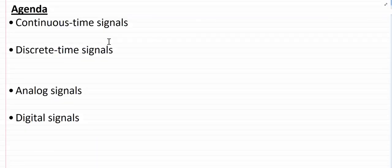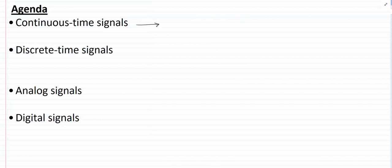Hello everyone, this is Saramal and in this video I am going to talk about different classes of signals such as continuous time signals, discrete time signals, analog signals, and digital signals. The continuous time signals are the signals that are continuous in the x-axis, whereas discrete time signals are the signals that are discrete in the x-axis.